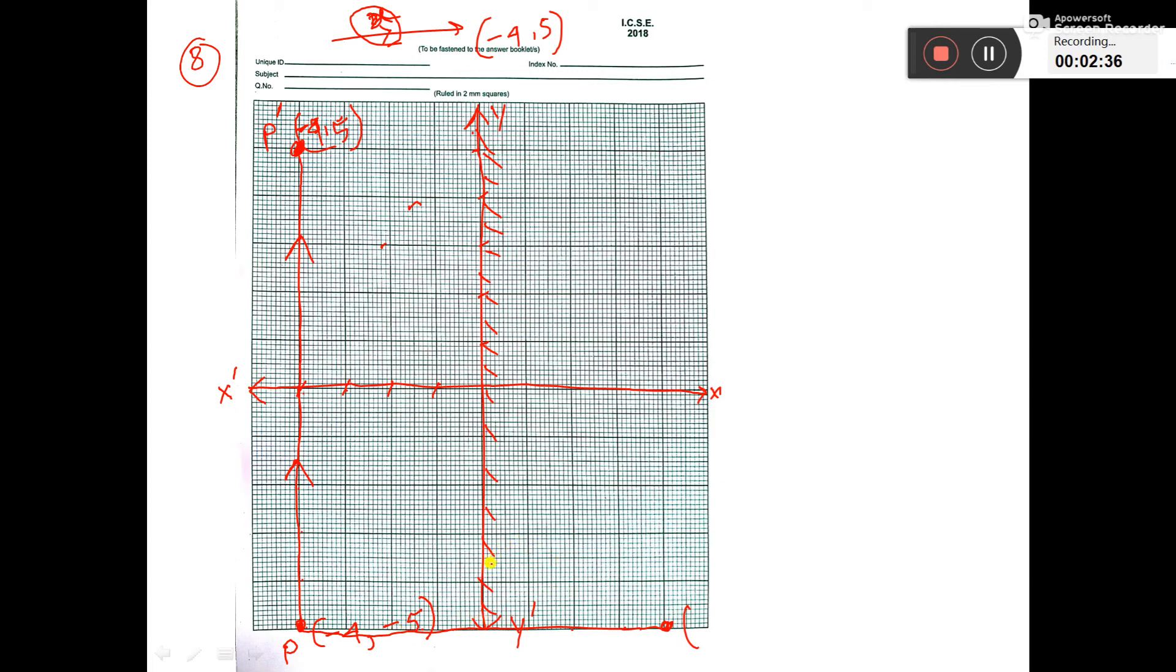So reflection in the y-axis, so change will be in the x-part. 4 comma minus 5. So it is 4 comma minus 5. And let's say this is P double dash. So P double dash is 4 comma minus 5. And you have to give arrow that it is going from here to here. So this is P dash point. That's all.